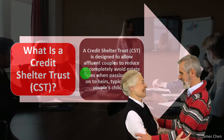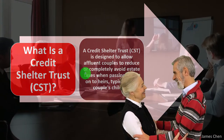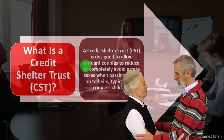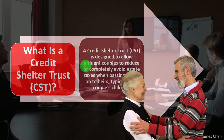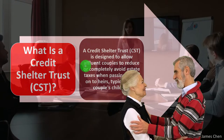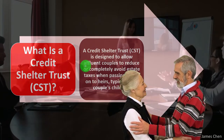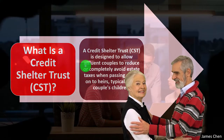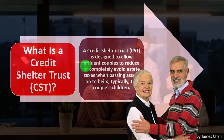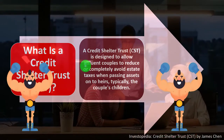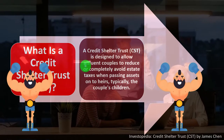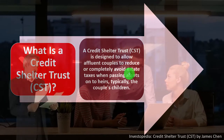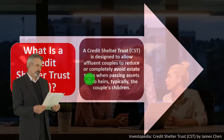The CST is designed for affluent couples because the estate tax — which you might think of as a death tax — is essentially a tax on the balance sheet rather than on income. So at the point of death, if your accumulated assets are significant enough, you could be subject to estate taxes. More wealthy individuals have greater concerns about reducing or completely avoiding this tax on their estate when passed to heirs.